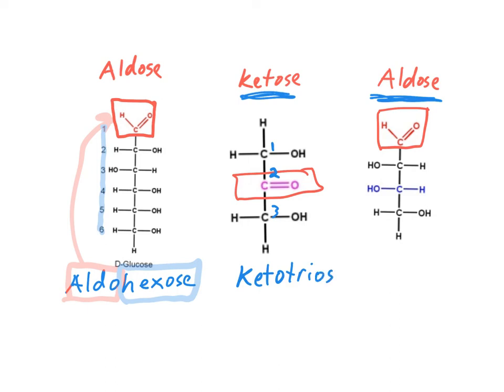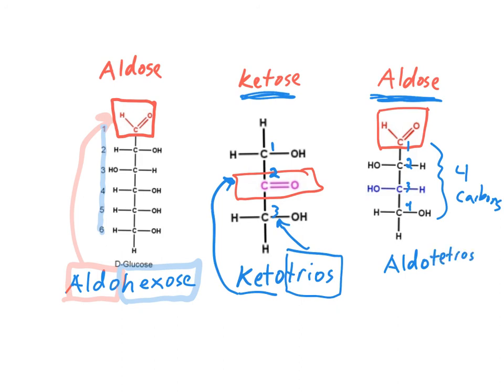All right. And so the triose, this is going to specifically tell us that we had three carbons. The keto group is going to tell us that we had a ketone. All right, the last one, we'll number them as well. One, two, three, four. So it's still an aldo. And then now, because we have four carbons, we're going to be, if anyone remembers, four is tetrose. So it'll be an aldotetrose.